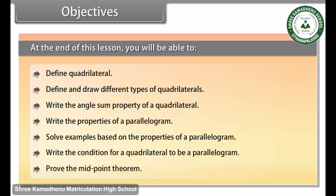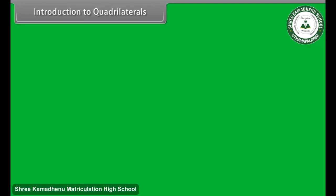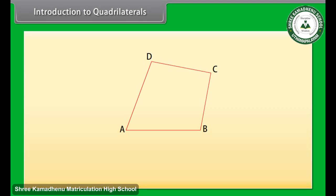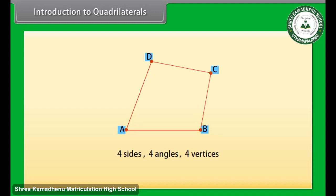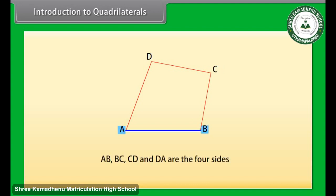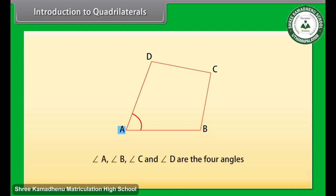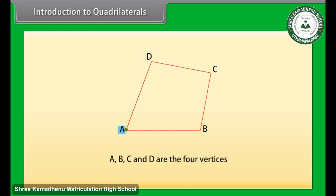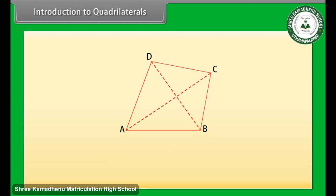Introduction to quadrilaterals. Look at the figure ABCD — this is a quadrilateral. A quadrilateral has four sides, four angles, and four vertices. Here AB, BC, CD, and DA are the four sides; angle A, angle B, angle C, and angle D are the four angles; and A, B, C, and D are the four vertices. Now, what will happen if we join its opposite vertices? If we join vertex A to C and B to D, we get the diagonals.